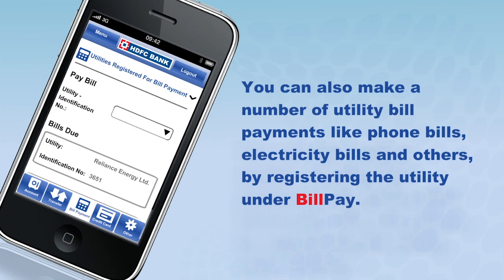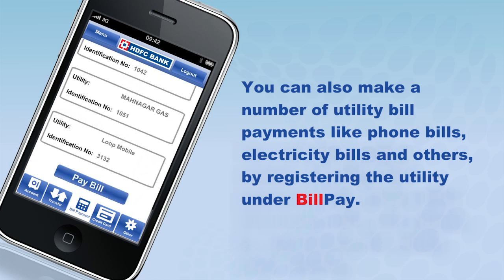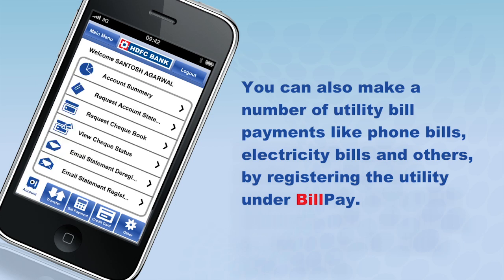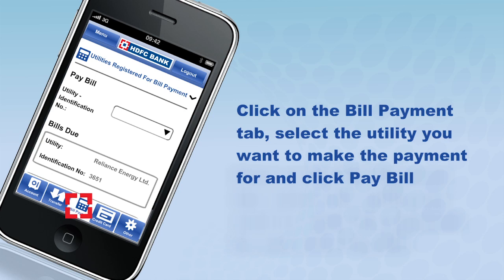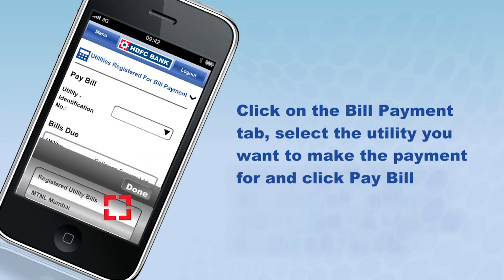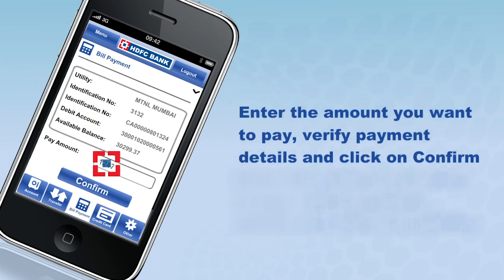You can also make a number of utility bill payments like phone bills, electricity bills, and others by registering the utility under Bill Pay. To make the payment, click on the Bill Payment tab, select the utility you want to make the payment for, and click Pay Bill. Enter the amount you want to pay, verify the payment details, and click Confirm.